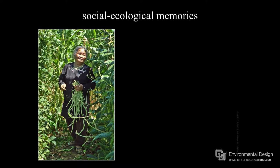Social-ecological memories are another element. This is a community garden in Sacramento — it's a Hmong garden. You can see she's growing footlong beans. You can read stories about refugees coming to the United States who would sew seeds into the hems of their jackets when they came over, because it was so important to bring something and be able to cultivate something from where they grew up.